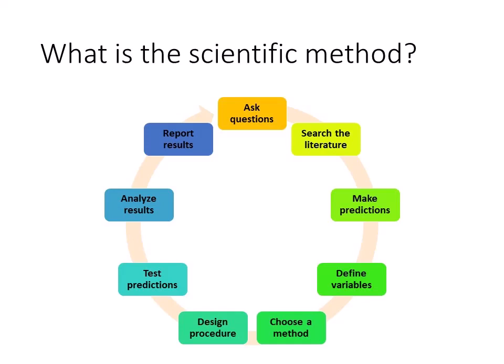We'll cover the next four stages of the process in this lecture: make predictions based on your knowledge of the topics, define the variables you will investigate, choose an appropriate research method, and design the procedures you'll use to execute your plan. The final stages of the scientific method involve testing predictions, analyzing results, and reporting results to share with the community.